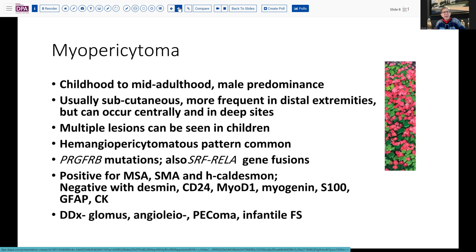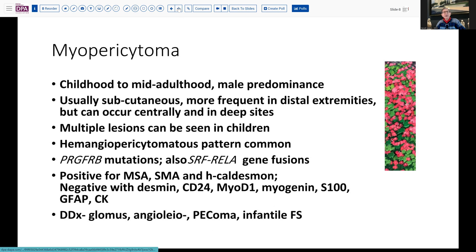These lesions have been found to have fairly consistent PDGFRB mutations, and may also harbor certain gene fusions in the SRF-RELA genes. As indicated, it's positive for actins and caldesmon, but negative with desmin, CD34 (other than endothelial cells), as well as the myogenic markers MyoD1 and myogenin. It's also negative with S100, GFAP, and cytokeratins. The differential often includes glomus tumor, since this has some similar features, and especially in a deep site it could be very difficult to distinguish. P-comas are less likely, and infantile fibrosarcoma is not of particular concern unless it's a myofibromatosis-type lesion.